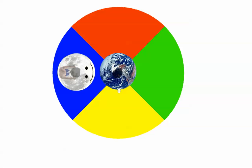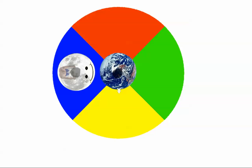So with that, I would just like to close and say, in this example, the moon mimics the teacup that does not rotate upon its own axis.